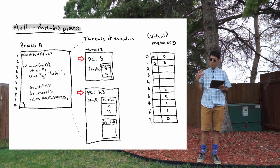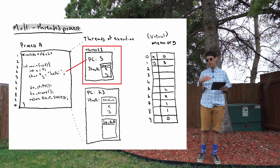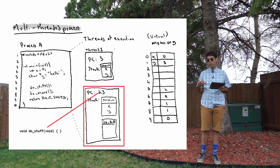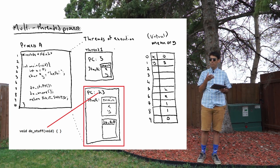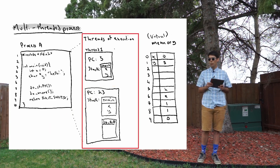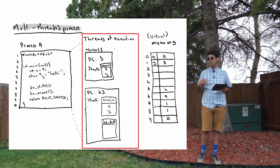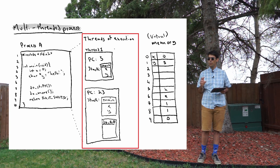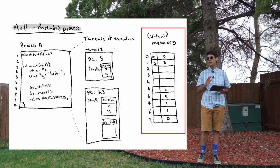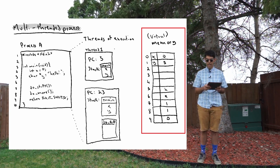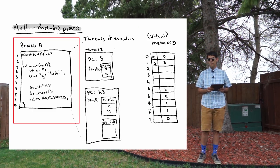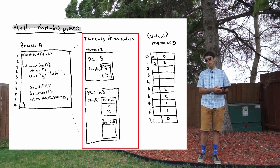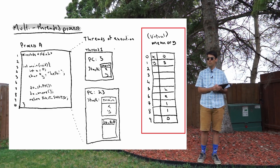We might have thread one with a program counter of 5, executing some instruction around line five, and thread two with a program counter of 23, perhaps inside a 'do stuff' function. Both threads of execution are concurrently executing within the context of this process — both at the same time — and they both have access to exactly the same memory within process A.